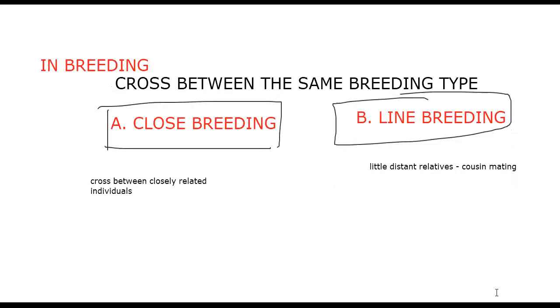To summarize: inbreeding includes close breeding and line breeding. Cross between closely related individuals is close breeding; cross between little distant relatives (cousin mating) is line breeding.